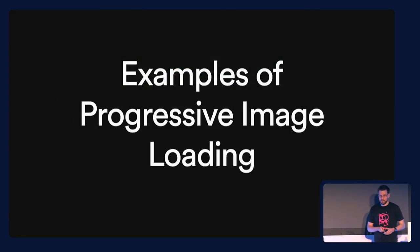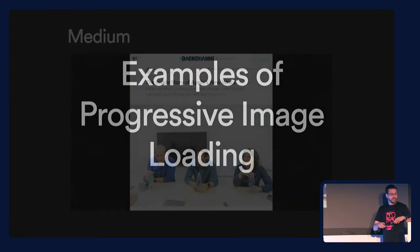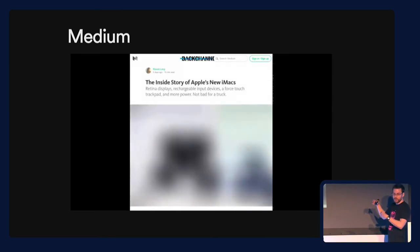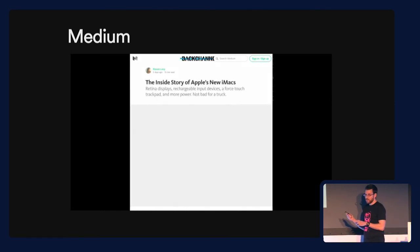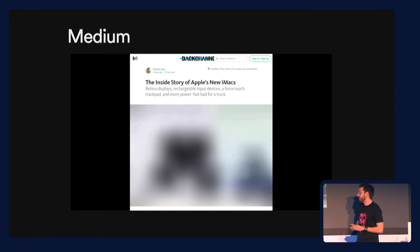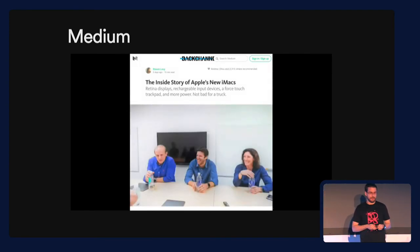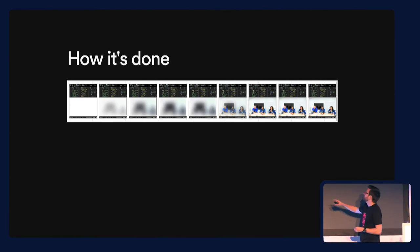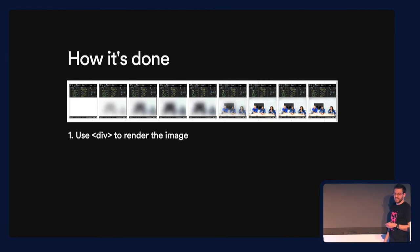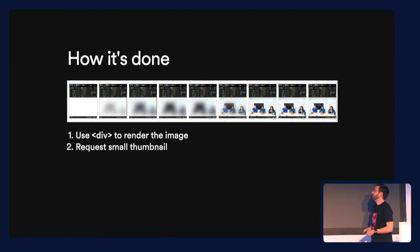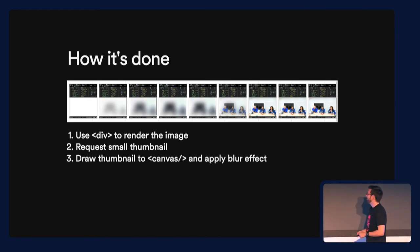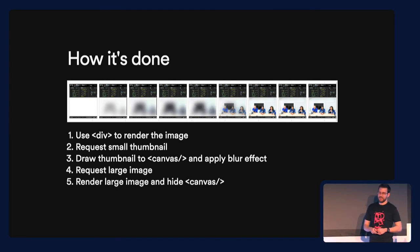I want to show examples of what I call progressive image loading — where a blurry image is transformed into the final image. This example is taken from Medium, where you may have seen that effect before. Some people call it the blur-up technique. The basic idea is that you start with a very tiny image that is stretched and then blurred, and you transition to the final image. Looking at the timeline, Medium uses a div to render the image, requests a small image, draws it to canvas and applies a blur, then requests the large image, renders it, and hides the canvas.